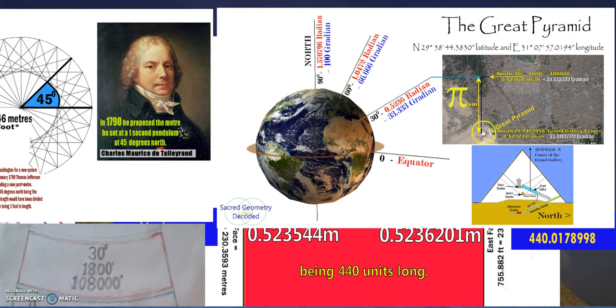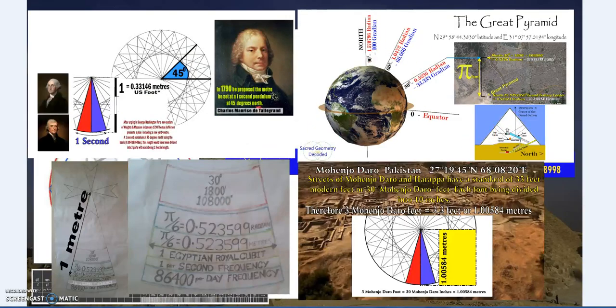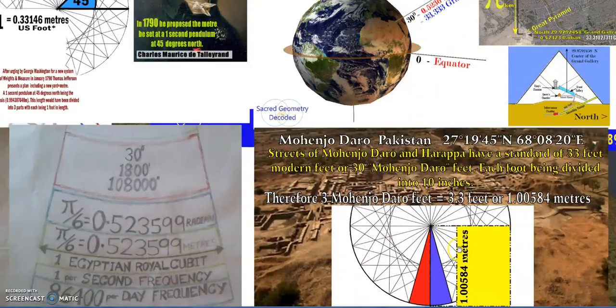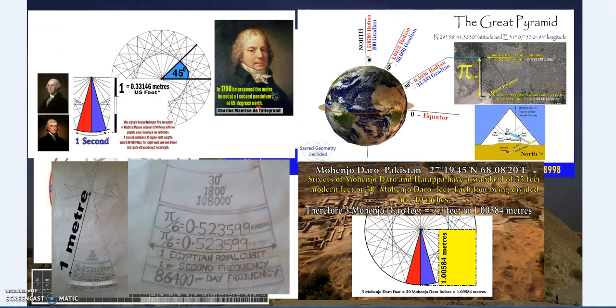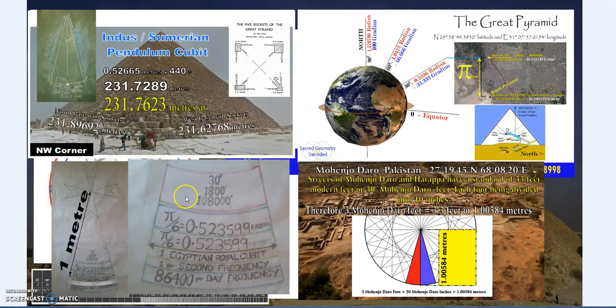Mohenjadaro—the Mohenjadaro unit of measure, the foot. Three of those is 3.3 meters, which is 1.0058. So one meter and six millimeters. That's an important point because if you want to scale the size...